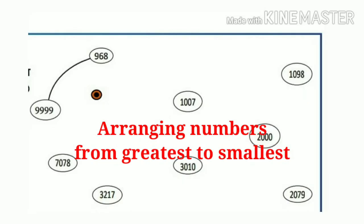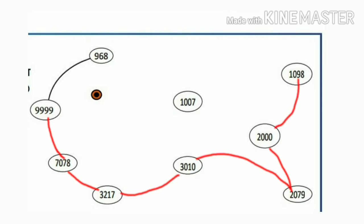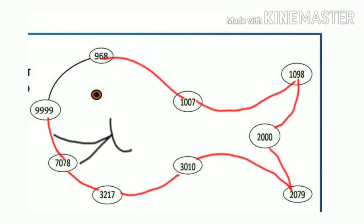Starting with 9,999, connect to 7,078, then 3,270, then 3,010, then 2,079, then 2,000, then 1,098, then 1,007, and finally 968. Connecting these numbers in descending order will give you a fish picture.